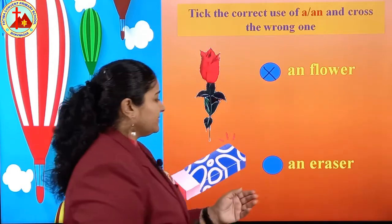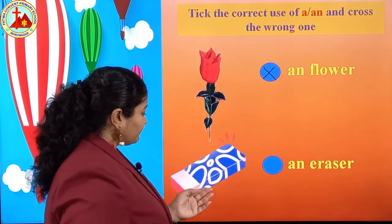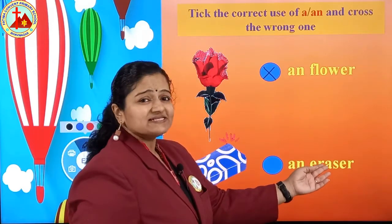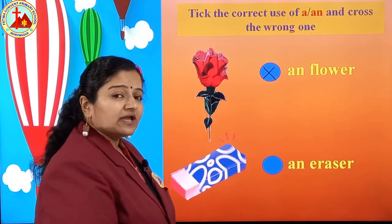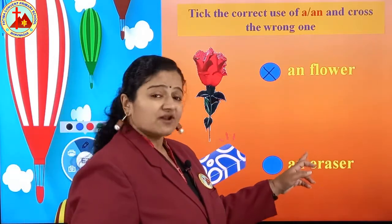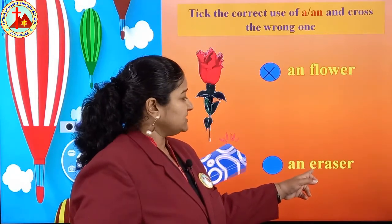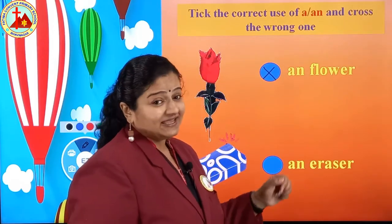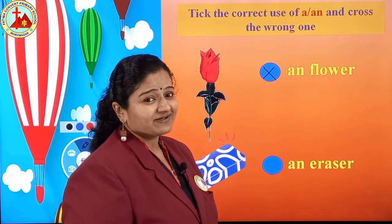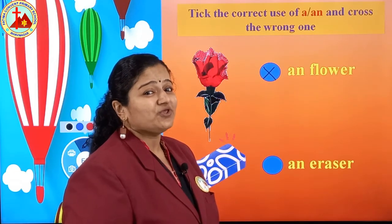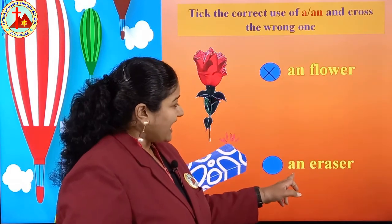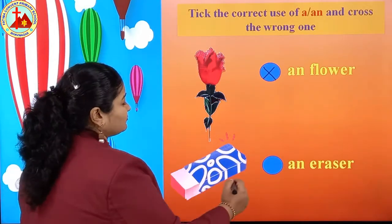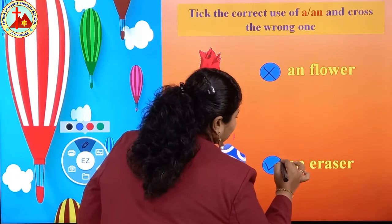Next one — A and AN. This is the picture of eraser. E, R, A, S, E, R — eraser. First letter is E. E is a vowel. Before E, AN is written. So this sentence is right — put a tick mark: an eraser.